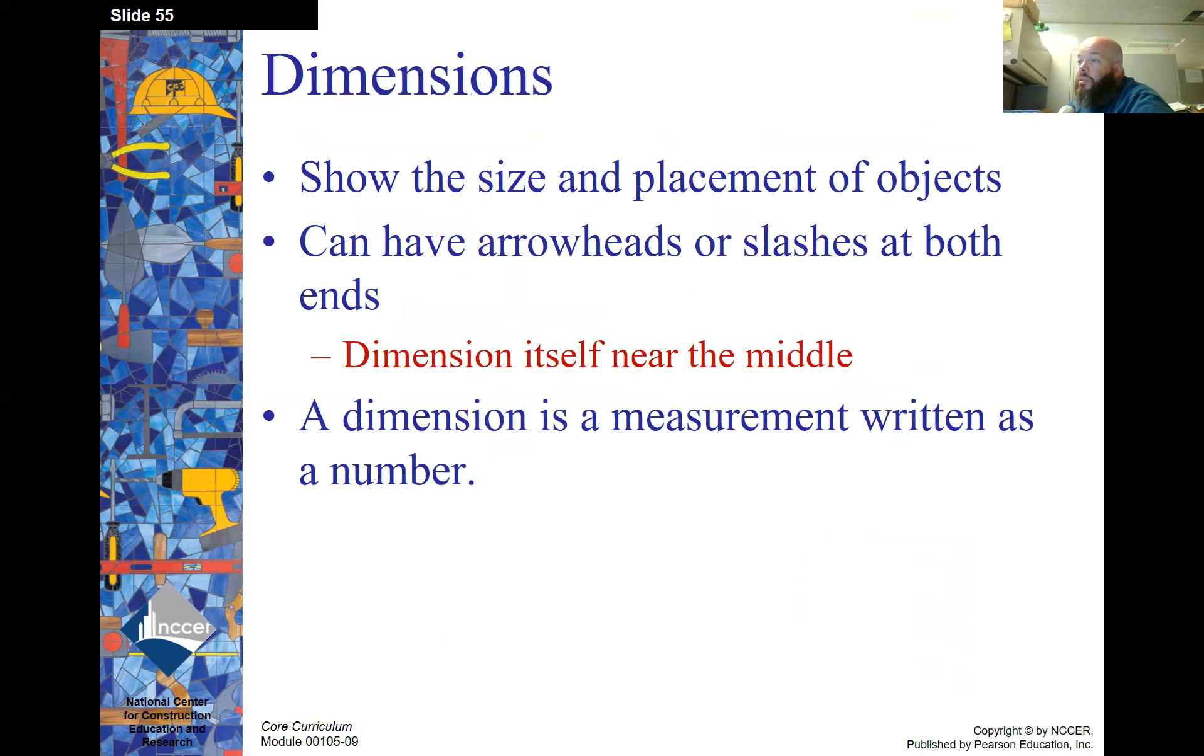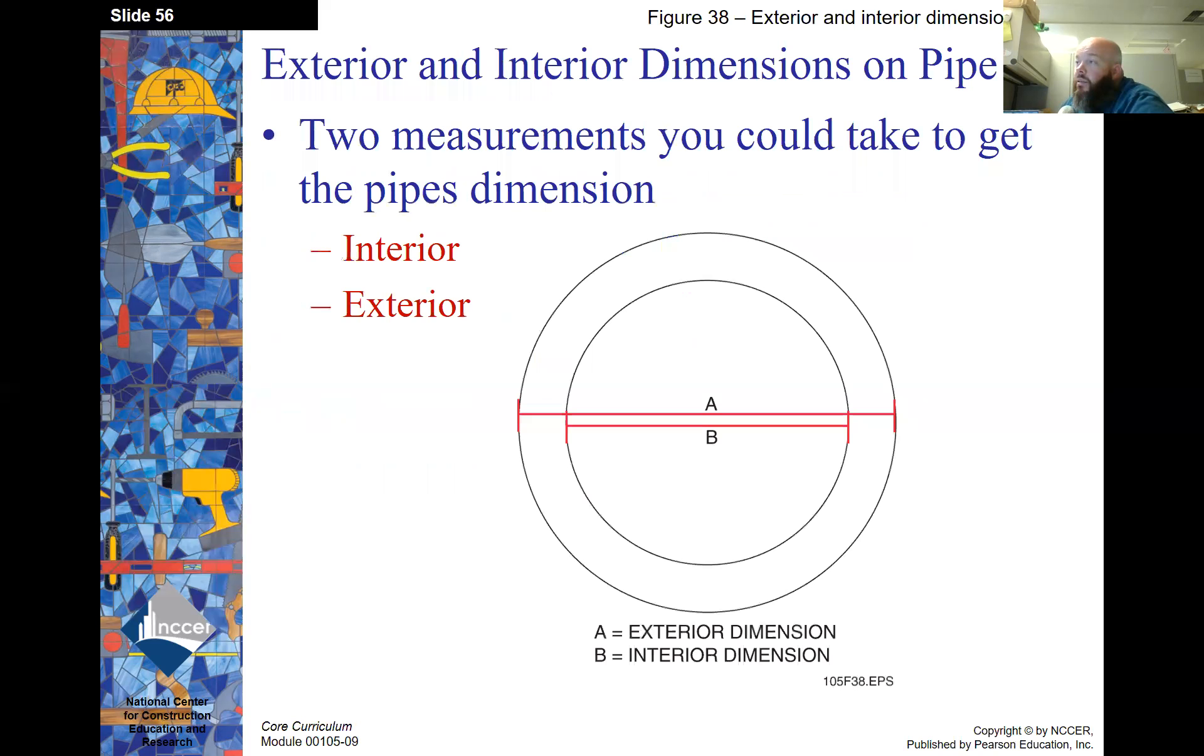Dimensions show the size and placement of objects. It can have arrowheads or slashes at both ends. Dimensions itself near the middle. A dimension is a measurement written as a number. And then exterior and interior dimensions of pipe. Two measurements you could take to get the pipe dimensions, interior and exterior. One thing I should mention about pipe. Pipe is nominally sized, which means that the dimension given for like say two inch pipe or six inch pipe or eight inch pipe doesn't necessarily truly reflect either dimension taken. It's not going to be an exact dimension like with a square tube. Pipe has some variances.